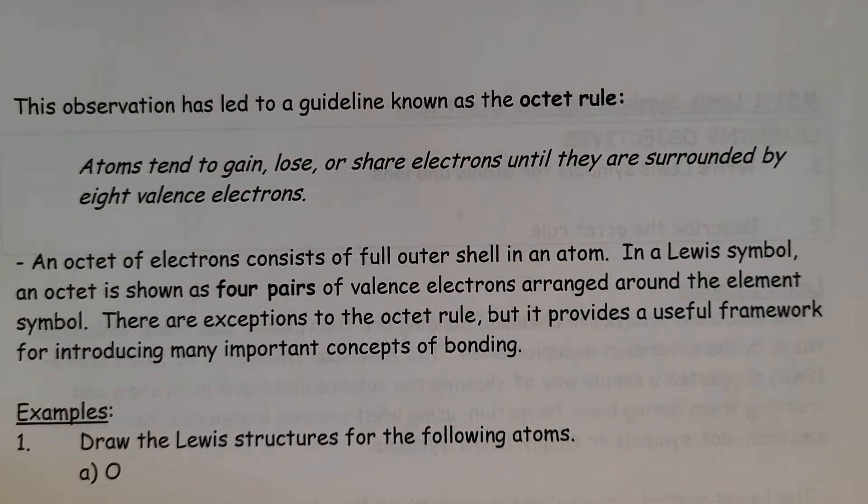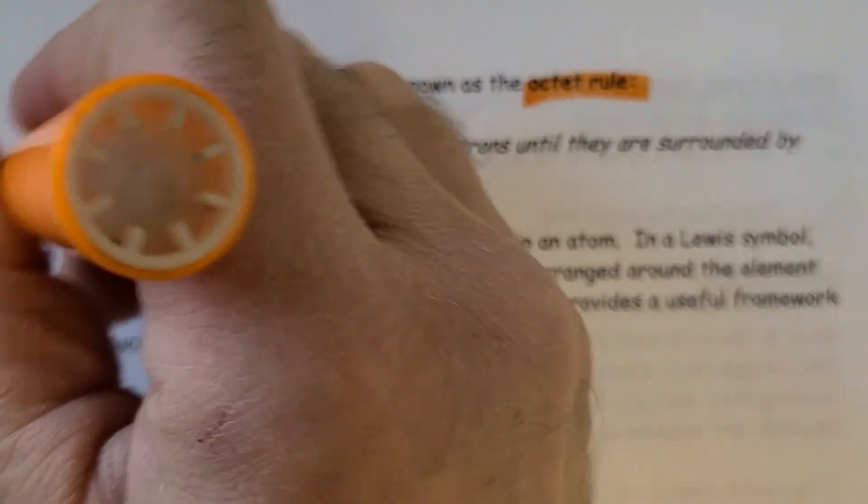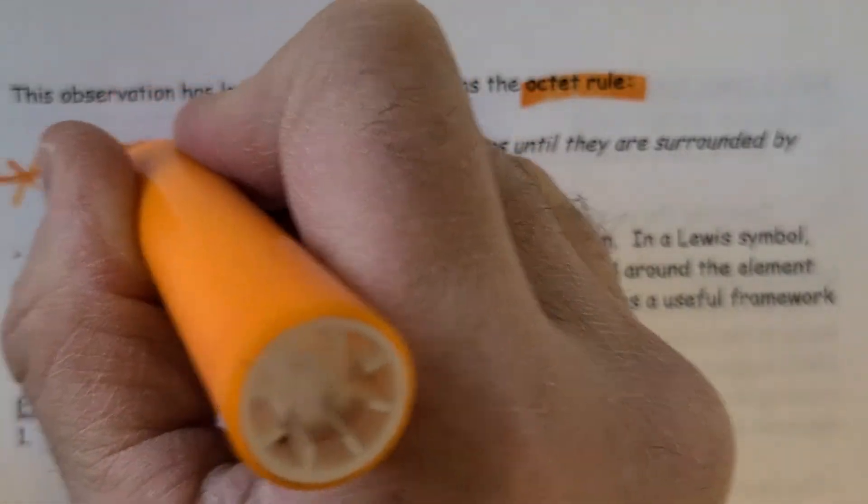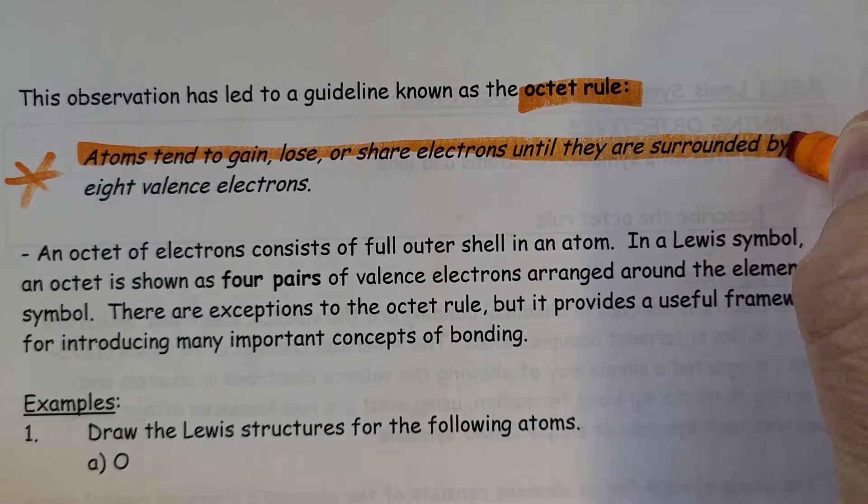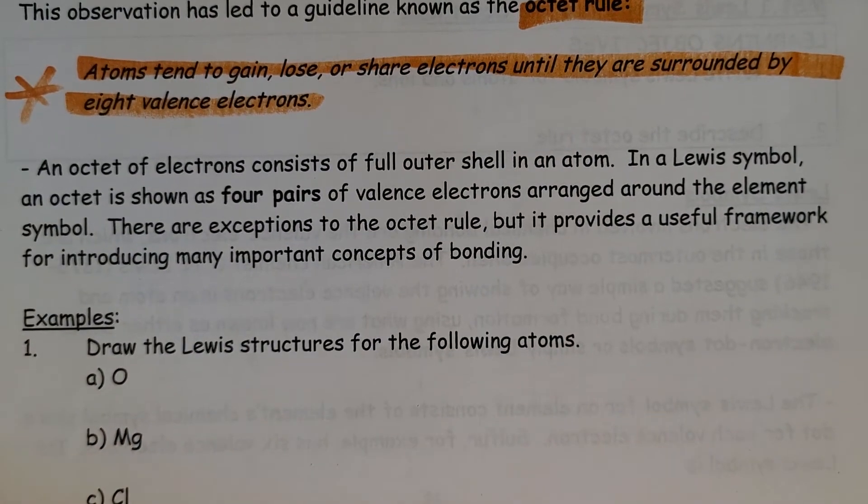This observation has led to the guideline known as the octet rule, where atoms tend to gain, lose, or share electrons until they are surrounded by eight valence electrons.